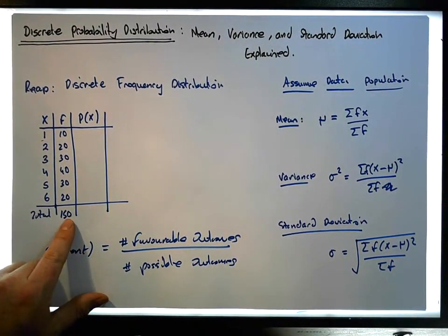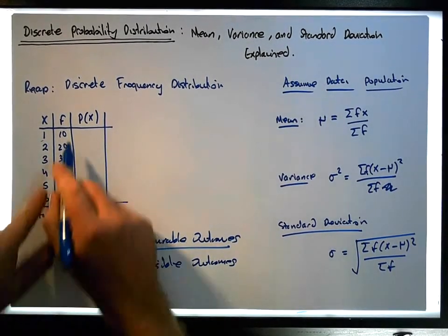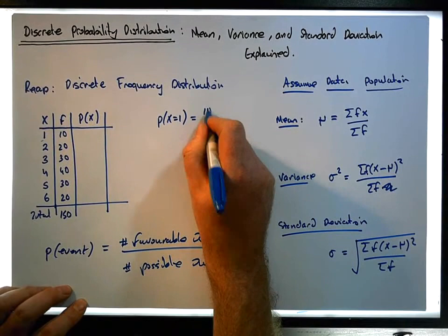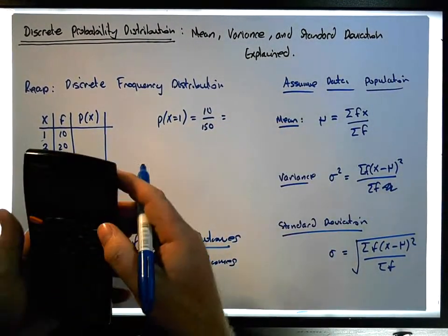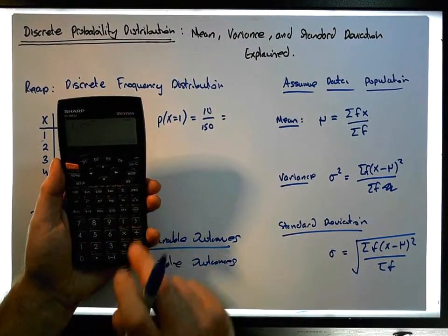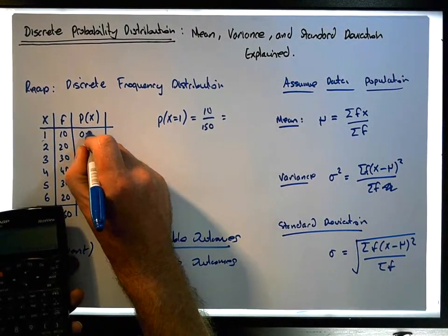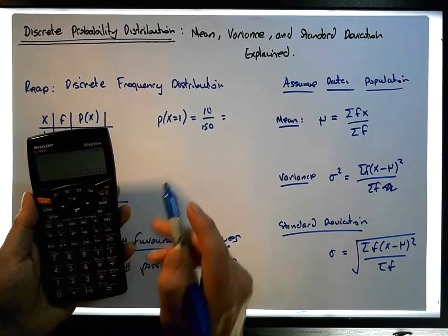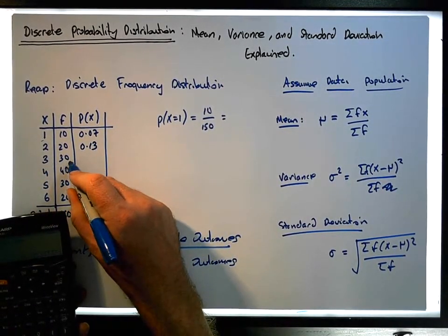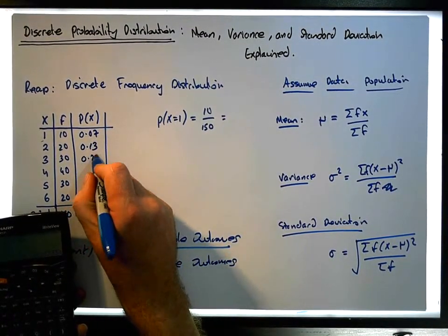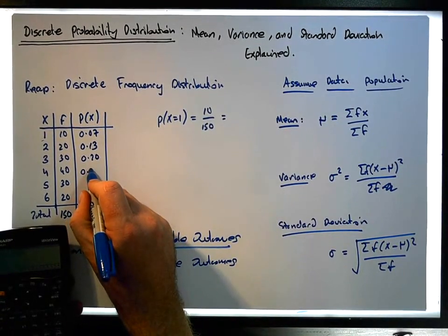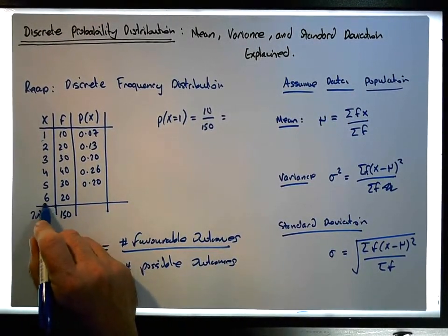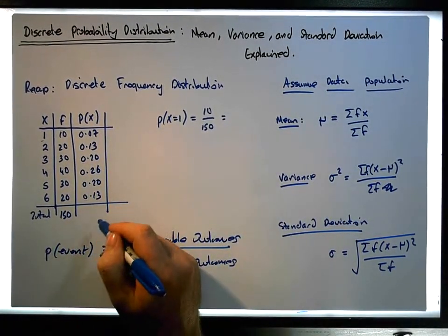What's the probability that rolling a die 150 times we get a one? The number of favorable outcomes is 10 out of 150, so the probability is 10/150, which equals 1/15, approximately 0.07. The probability of getting a 2 is 20/150, giving 0.13. The probability of getting a 3 is 30/150, which is 0.20. The probability of getting a 4 is approximately 0.26, getting a 5 is 0.20 since there are 30 of them, and getting a 6 is 0.13 since there are 20.